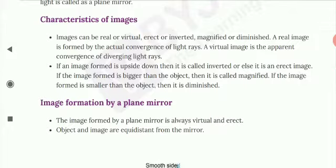Object is generally shown by the English alphabet 'u' and image is generally shown by the English alphabet 'v'. Both these letters will be in small letters.